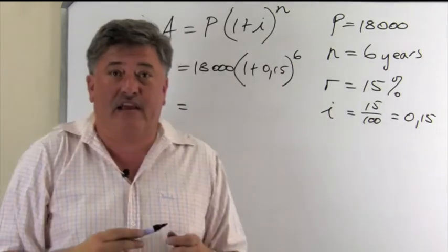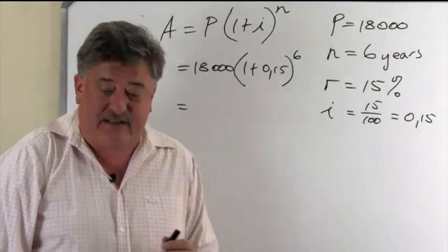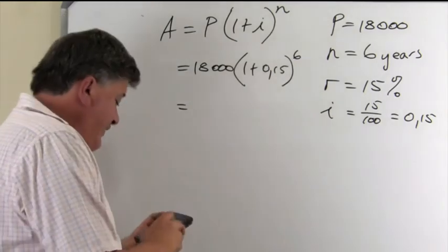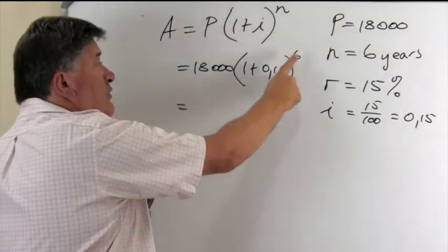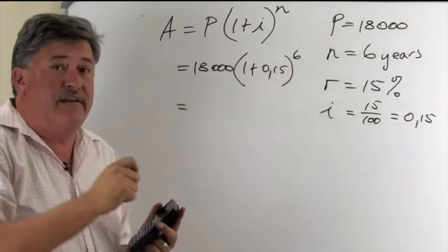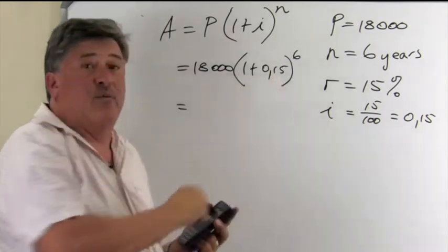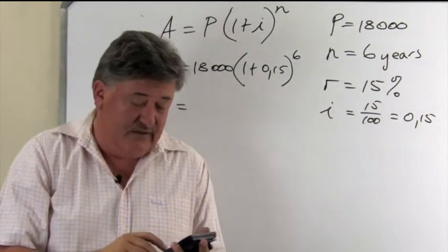We take our calculators and now we calculate that. So, very similar again to what we did. Only difference is now the n is an exponent and it's not multiplied with i like in simple interest.